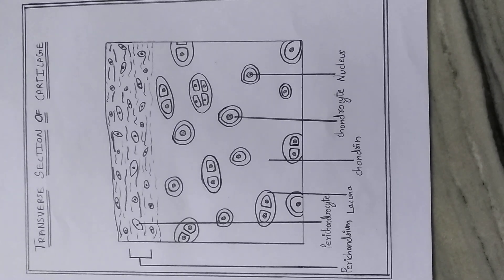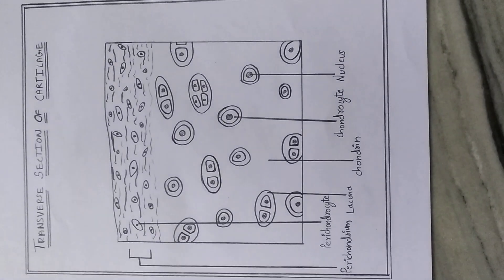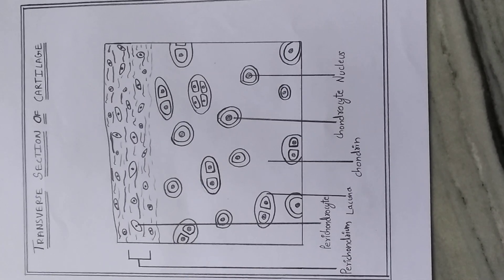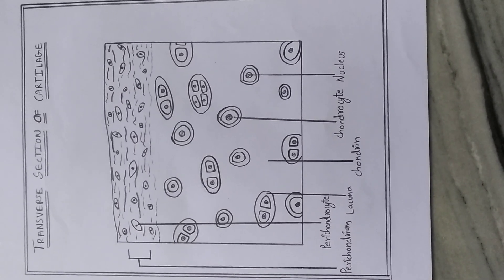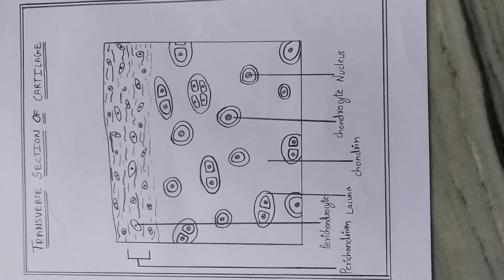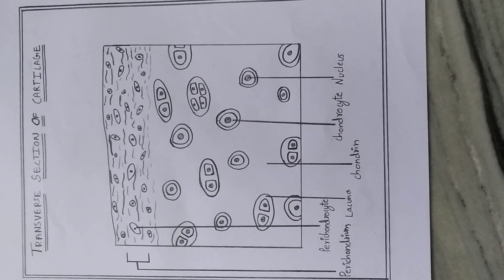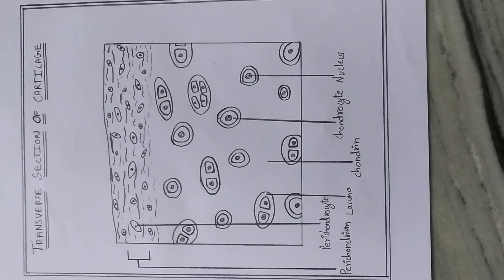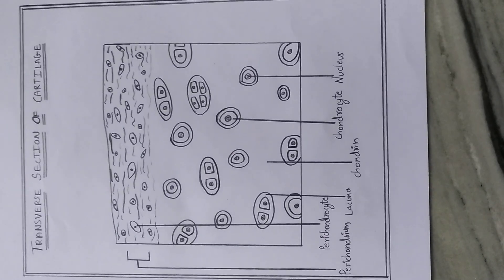Cartilage is avascular, with no blood vessels. The ground substance of the matrix has two kinds of fibers: elastic fibers and collagen fibers. Cartilage is enveloped by a sheet called the perichondrium.